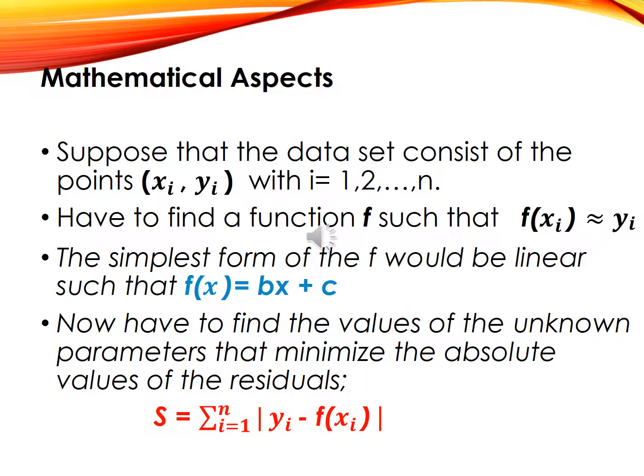Suppose the data set consists of points (xi, yi) with i from 1 to n, and we want to find a function f such that f(xi) is approximately equal to yi. We suppose that the function f has a particular form with parameters to be determined. For example, the simplest form is a linear function f(x) = bx + c, where b and c are unknown. For a quadratic form, f(x) = ax² + bx + c, where a, b, and c are unknowns. We seek estimated values of the unknown parameters that minimize the sum of the absolute values of the residuals |yi - f(xi)|.